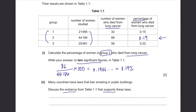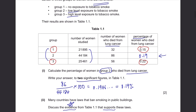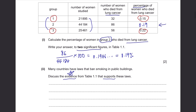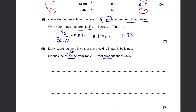Since we have to use evidence from the table, we can state some numbers. For Group 1, only 0.15% of them died of lung cancer and they were not exposed to tobacco smoke at all. Then Group 3 had 0.22% of women who died of lung cancer — those with high-level exposure to tobacco smoke. This shows that the greater the exposure to tobacco smoke, the greater the risk of dying from lung cancer.